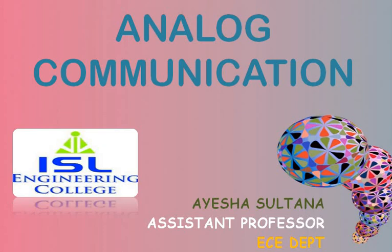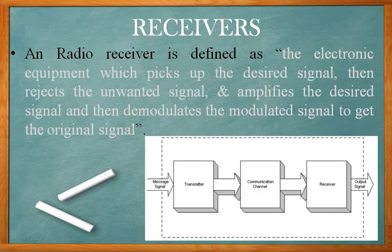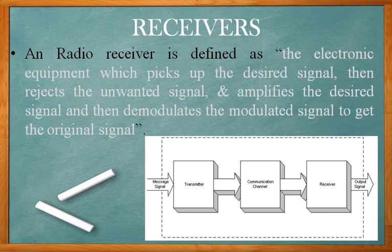Do you know what is a receiver? A radio receiver is defined as an electronic equipment which picks up the desired signal, rejects the unwanted signal, amplifies the desired signal, and then demodulates the modulated signal to get the original signal. In this communication system, the signal is transmitted after modulation — first you modulate your signal, then amplify it, then transmit through a transmitter.